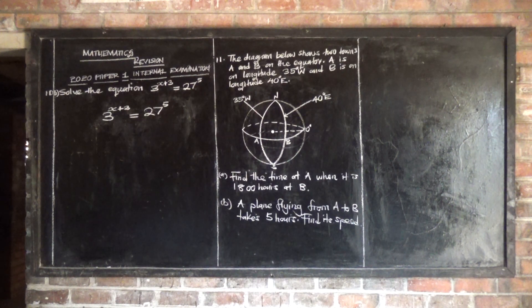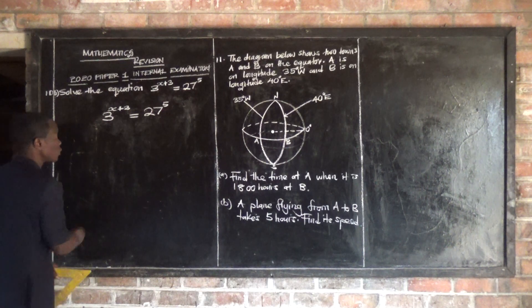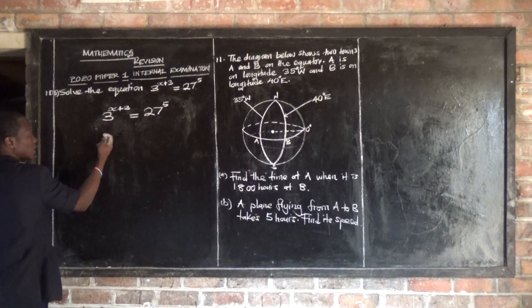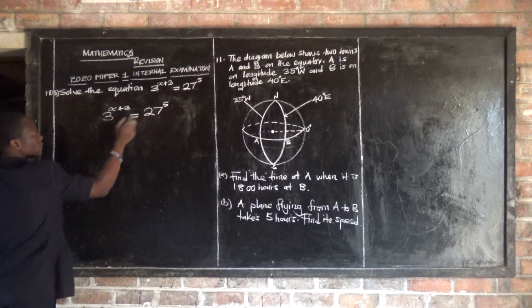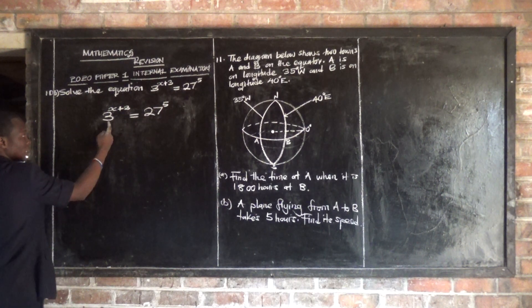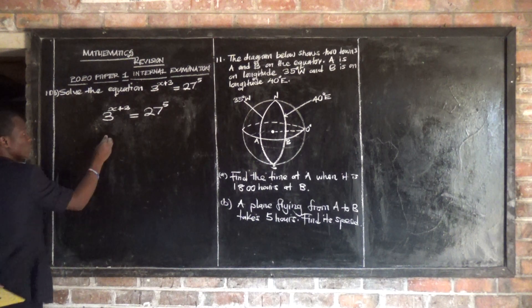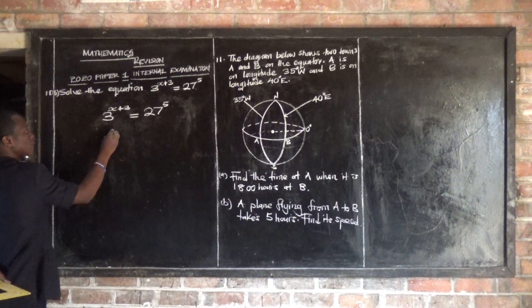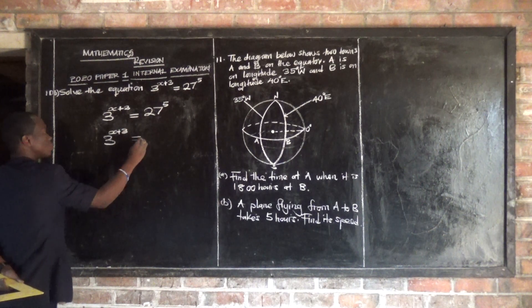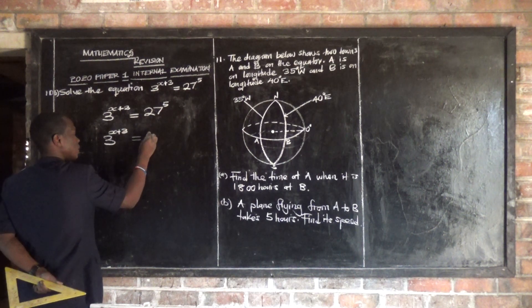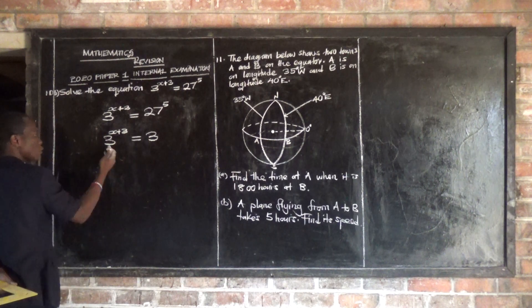The first thing you need to do is ensure that the bases are the same and consider the smallest base to use. So which one is 3 and 27? 3. So I'm going to maintain the 3 as the base. So I'm going to say 3 raised to the power x plus 3 is equal to, I'm going to put on the 3 side as well.